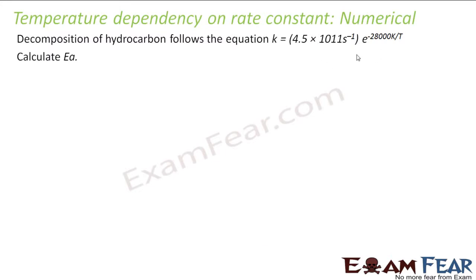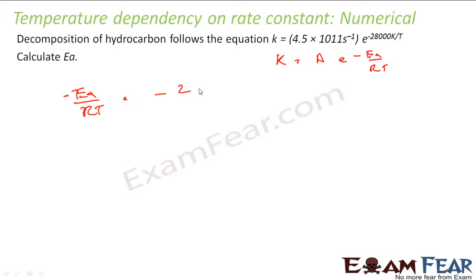The next question states that the decomposition of a hydrocarbon follows a given equation, and we need to find the value of Ea. K equals A·e^(−Ea/RT), so if we compare the given equation with this form, we identify −Ea/RT in the exponent. T gets cancelled and the negatives cancel, so let's put in the value of R.